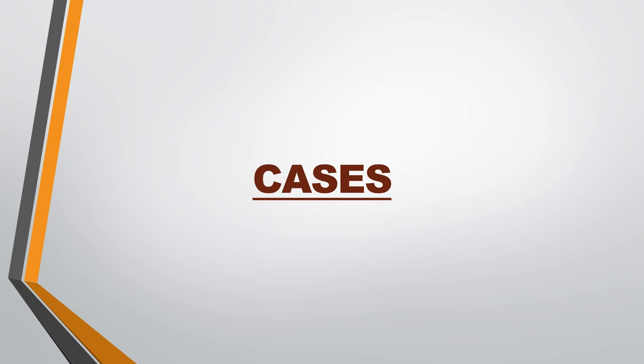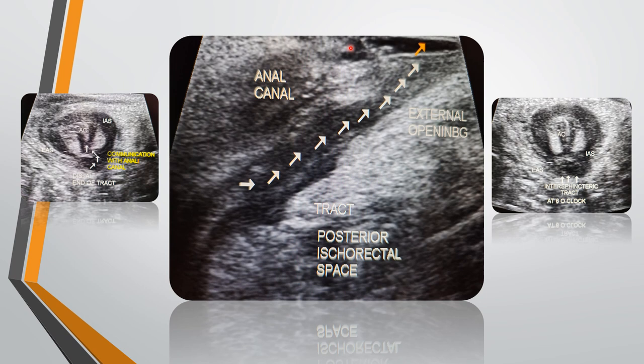Now we come to the cases. In the first case, the linear probe was kept on the anal opening. The sagittal image shows the anal canal with a single linear non-branching tract arising from the anal canal, extending downwards and opening into the external opening site. There is no evidence of any abscess, collection, or branching adjacent to this tract.